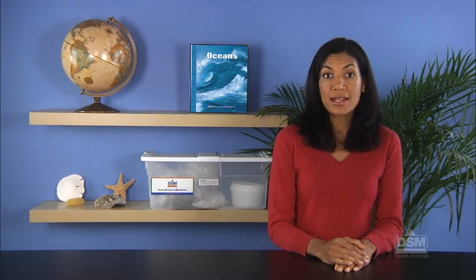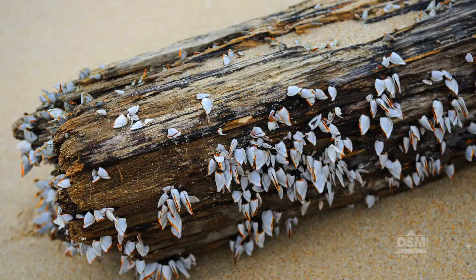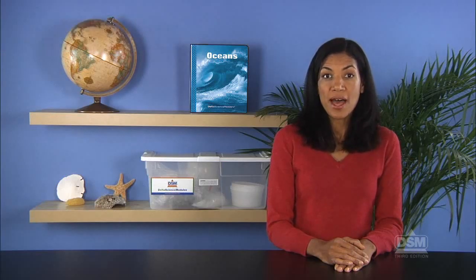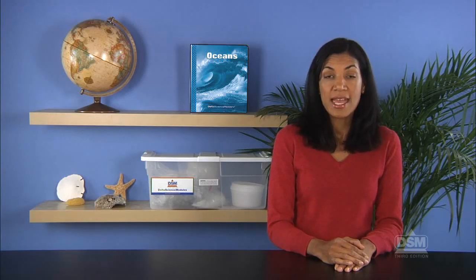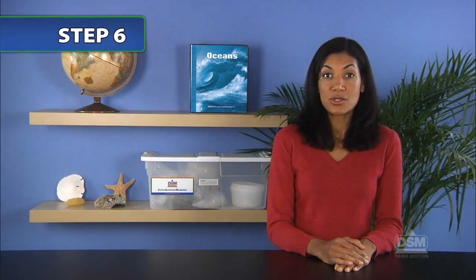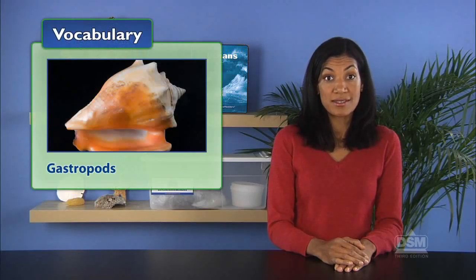Add that most bivalves live in sand or mud, although some attach themselves to rocks and pilings. Most bivalves move by extending and contracting their large muscular foot. However, some can move through a kind of jet propulsion by opening and then clamping shut their shells. Finally, introduce the class to the term beds, which refers to colonies of bivalves. Next, distribute a copy of the mollusks bivalves fact sheet to each student and review the descriptions of each type of shell. Have students match the shells in their sets to the descriptions on the fact sheet, then have them draw an outline of each shell and label it.